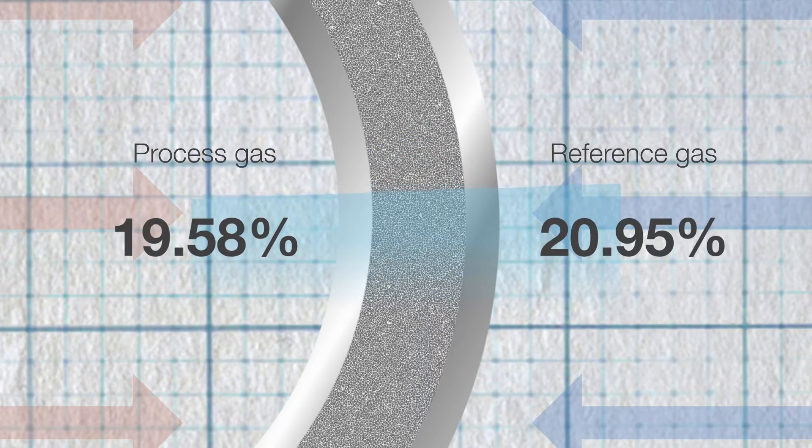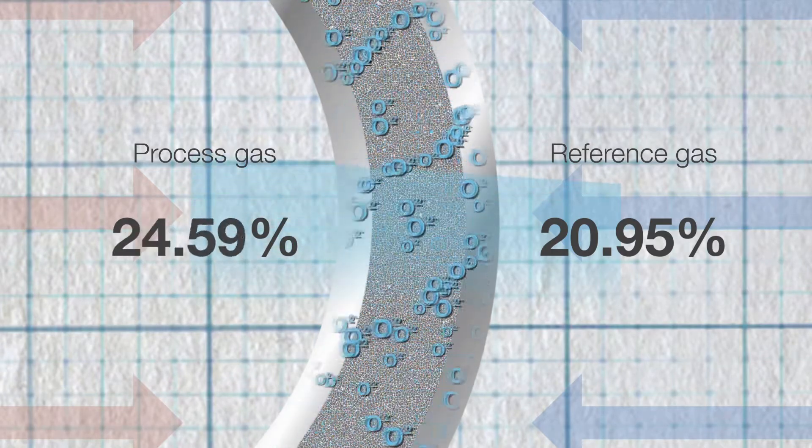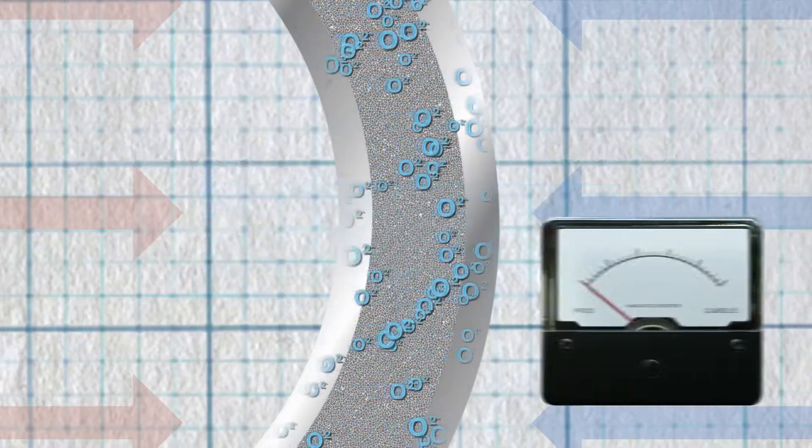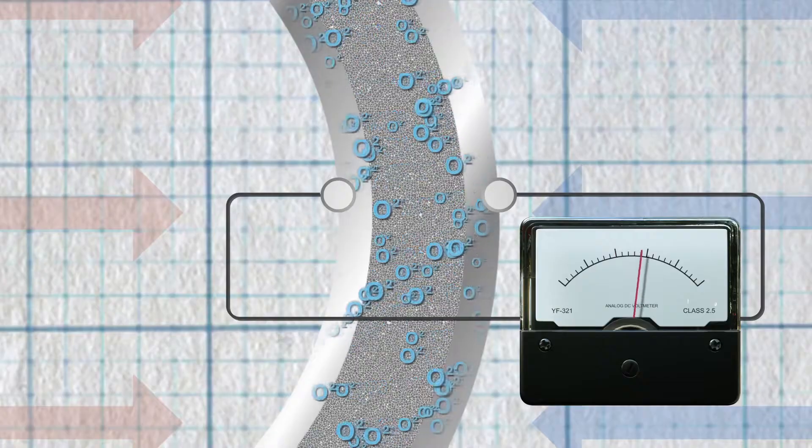The reaction at the two electrodes will differ, generating a corresponding potential difference. Using an appropriate device, this difference can be measured to produce a percentage oxygen concentration reading.